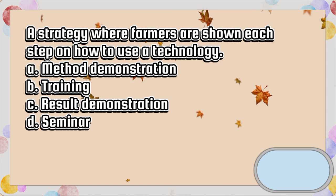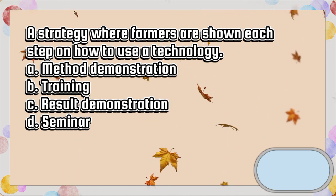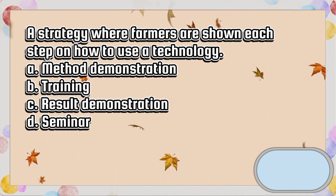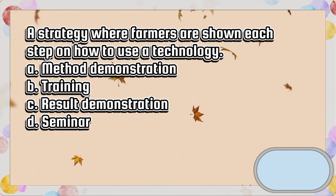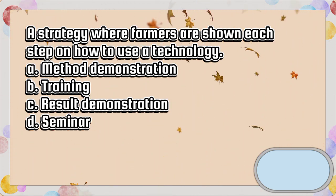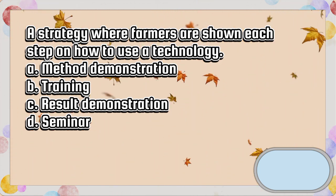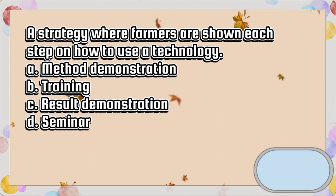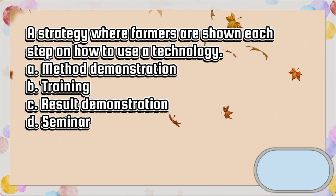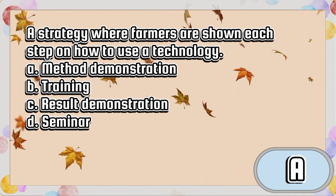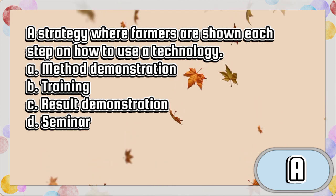A strategy where farmers are shown each step on how to use a technology. A. Method demonstration. B. Training. C. Result demonstration. D. Seminar. The answer is letter A.